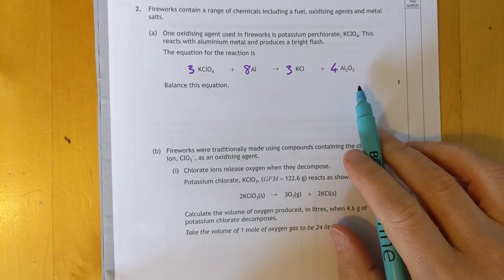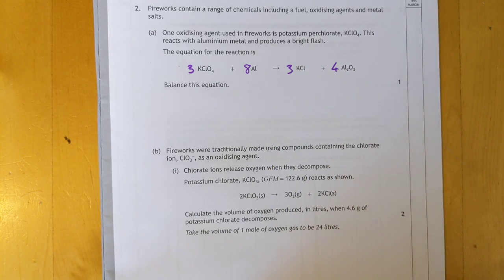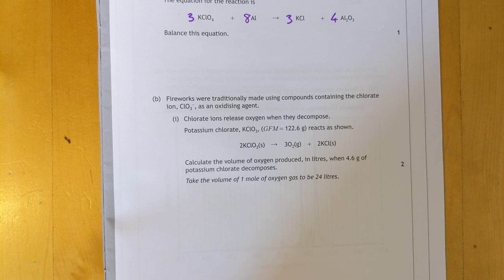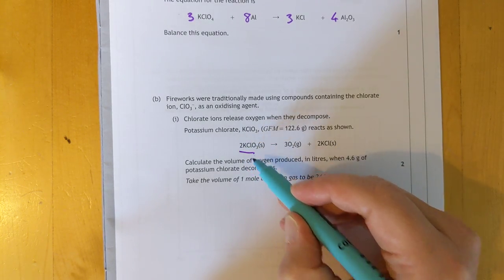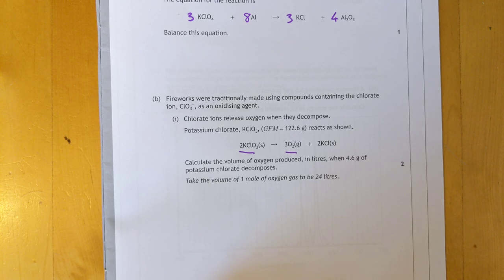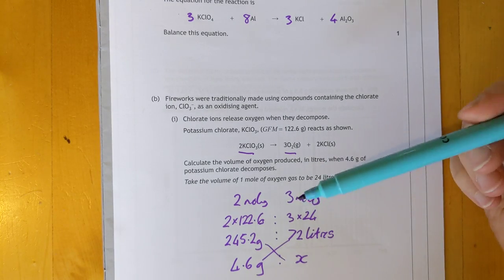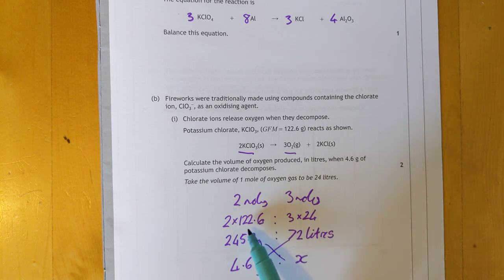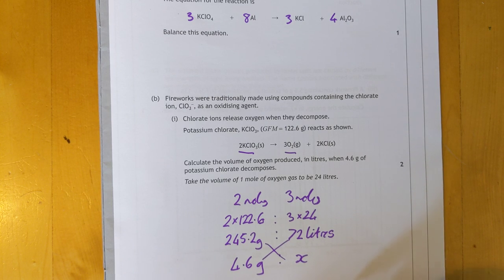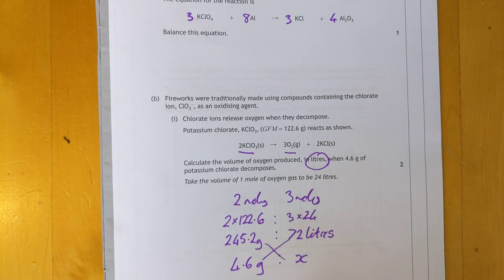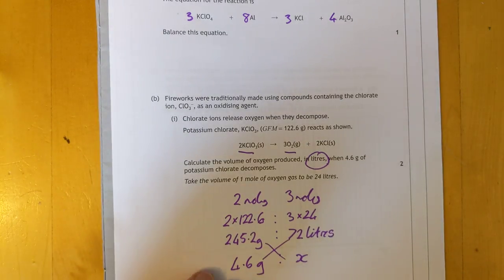Quick balancing here. I started with the oxygens. Made sure there was 12 oxygens on both sides. And everything else falls into place. Calculate the volume of oxygen gas. There's a volume of gas reaction when 4.6 grams of potassium chlorate decomposes. So 2 moles makes 3 moles. That means 2 lots of this GFM makes 3 lots of this volume. So 245 grams makes 72 litres. But we don't have 245 grams. We have 4.6 grams. Do your cross multiplication.